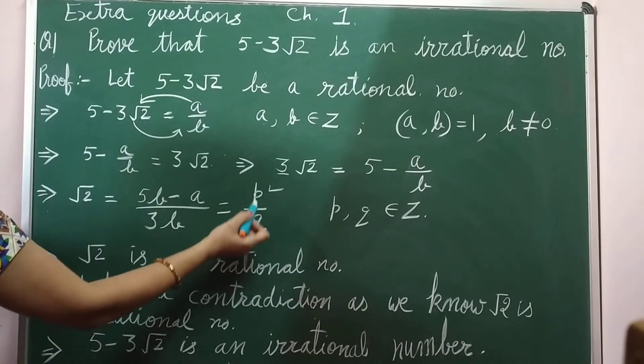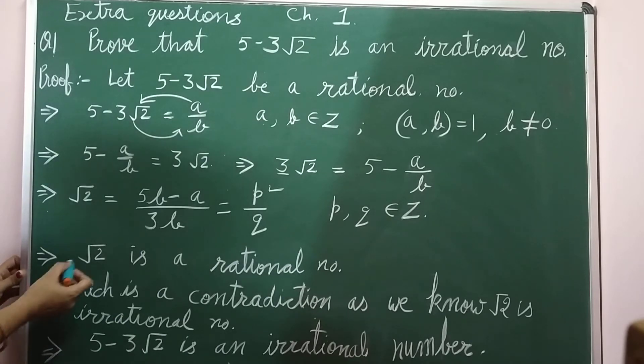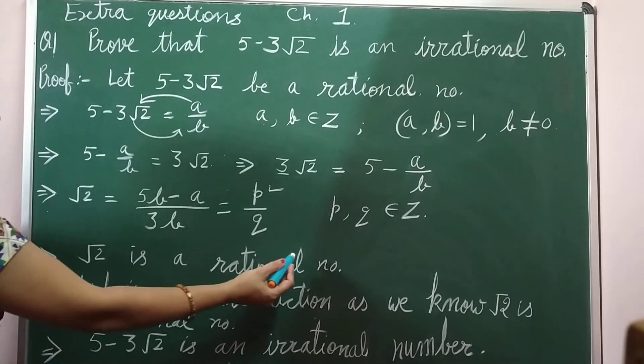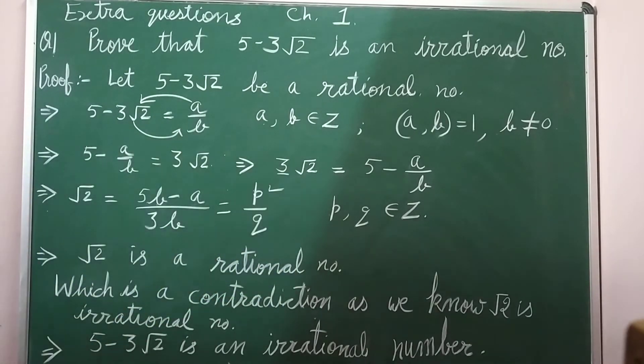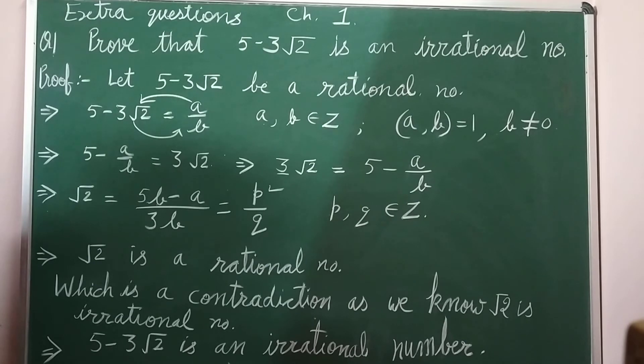If root 2's value is the ratio of two integers in which the denominator is non-zero, it means root 2 would be a rational number. This is what we have derived. But we all know root 2 is not a rational number, it is an irrational number.